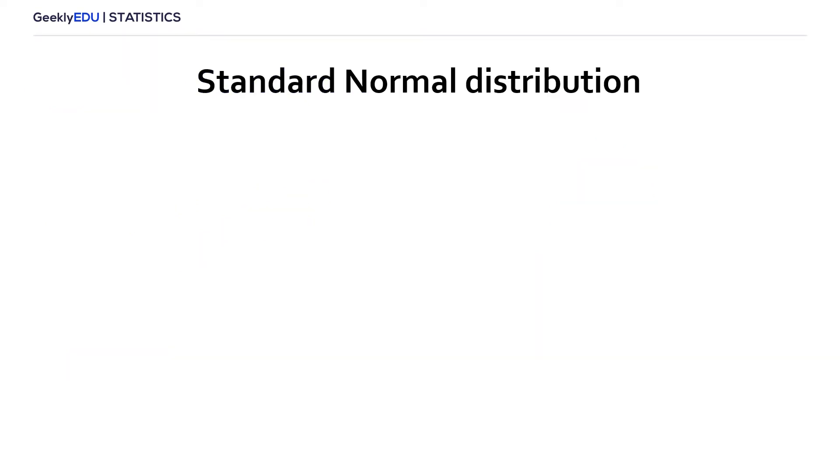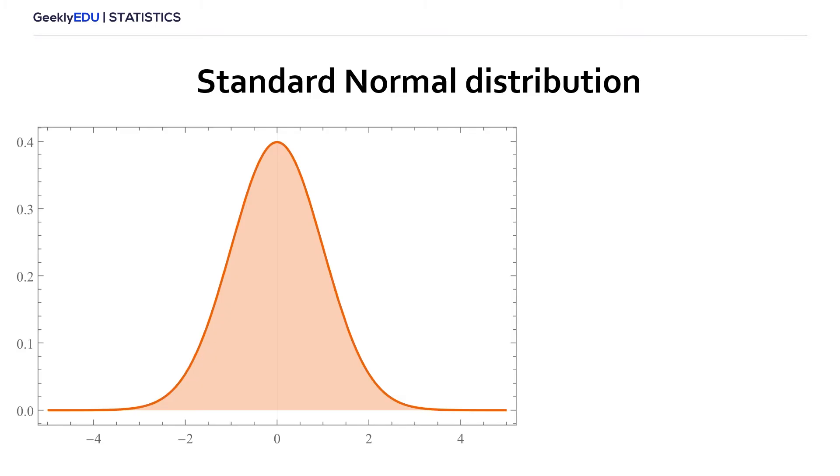The standard normal distribution, as its name said, is the standardization or conversion of the normal distribution. In this case, the mean will always be 0 and the standard deviation equal to 1. Therefore, for any study or experiment, we will use the same curve, but we will need to standardize our data.